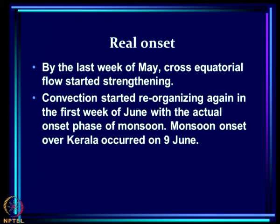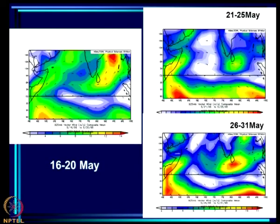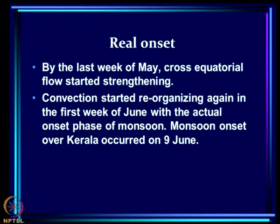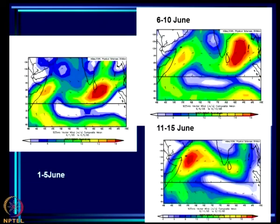This is why it was a bogus onset. By the last week of May, cross-equatorial flow started strengthening and convection began reorganizing. By May 21–25 the cross-equatorial flow was strong in the southern hemisphere and also strengthening further, and by end of May the entire region had very strong cross-equatorial flow.